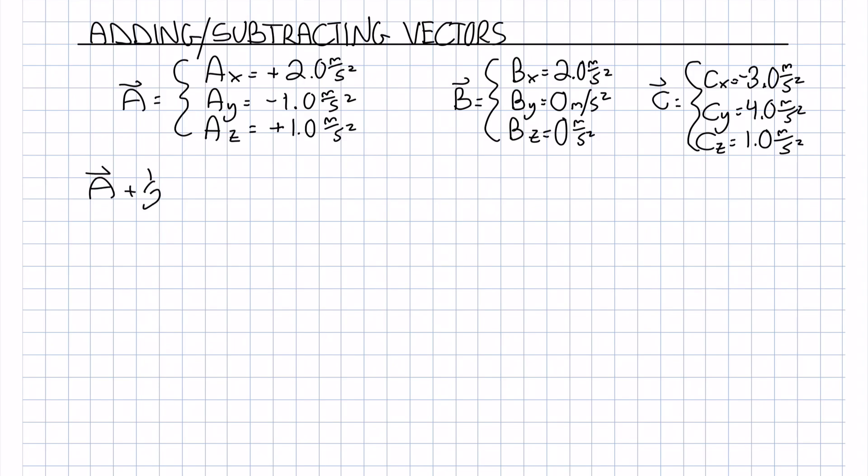Let's say we want to do a mathematical operation with these vectors where it's A plus one half B minus C. So to find the x component of D, Dx will equal Ax plus one half Bx minus Cx.